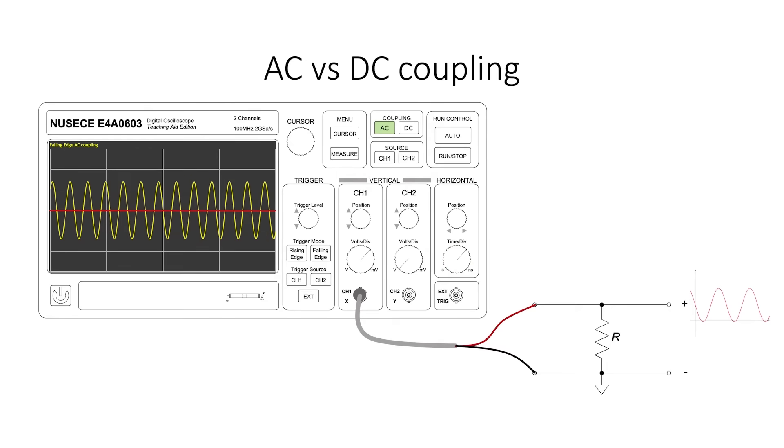If you select AC coupling rather than DC coupling for a signal, it can be convenient for ensuring that AC signals are centered on the graph, but keep in mind that any DC offset will disappear.